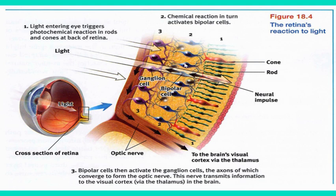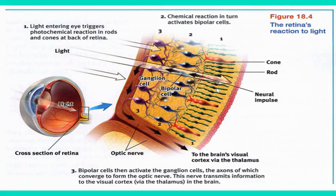Once transduction occurs, the signal goes to the bipolar cells. The cones each get their own singular bipolar cell, which is why we have such an ability to see finer detail — there's a lot more clarity in the information that comes from the fovea because we have one singular bipolar cell per cone. The rods and cones on the outside of the fovea share bipolar cells. Then the signal goes to the ganglion cells, which all come together to travel down the optic nerve, taking those neural messages to the brain where we process them.